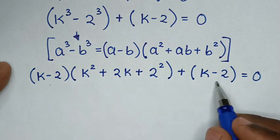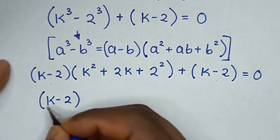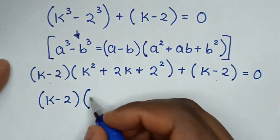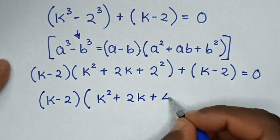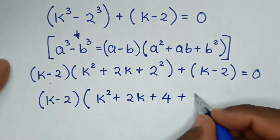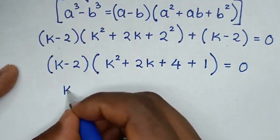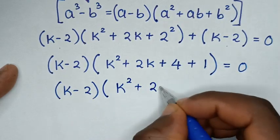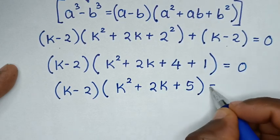From here, k minus 2 is common, so we take k minus 2 out of the bracket. This part divided by k minus 2 gives k squared plus 2k plus 2 squared, which is 4, then plus k minus 2 divided by k minus 2, which is 1, bracket equals 0. So it will be k minus 2, bracket, times k squared plus 2k plus 4 plus 1 — which is 5 — bracket equals 0.